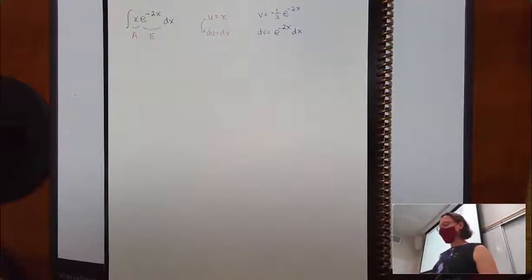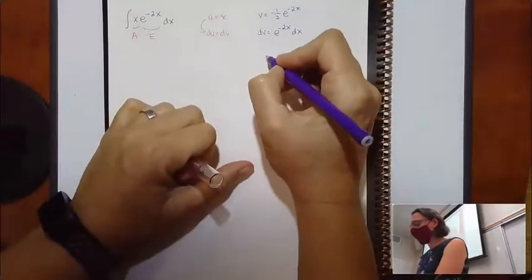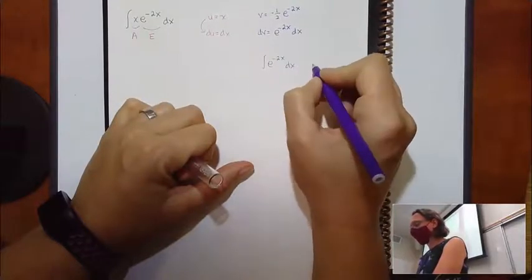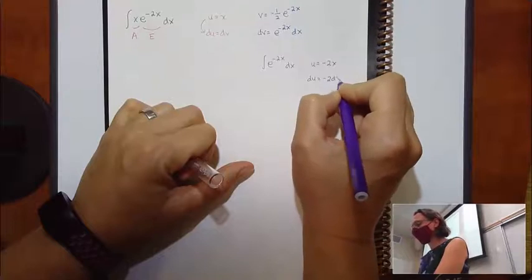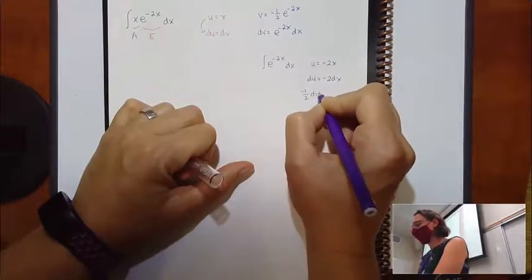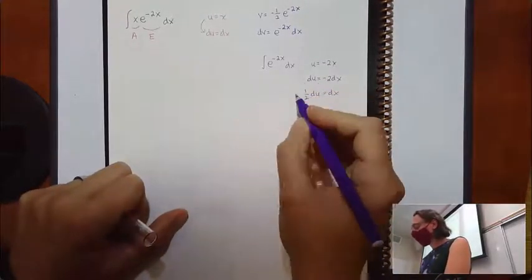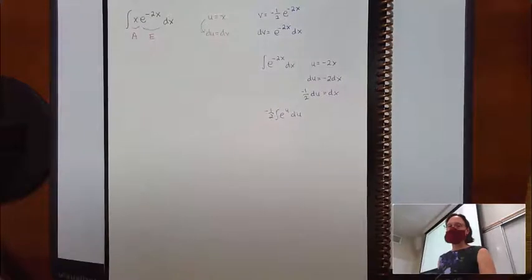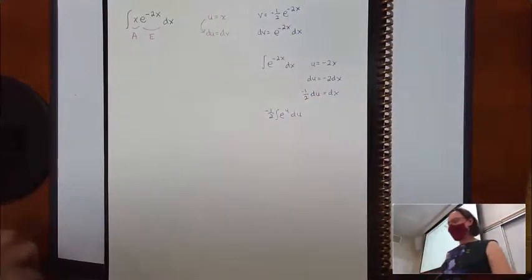That negative one half is important. If we think about finding the anti-derivative of e to the negative 2x dx, I could come off to the side and let u be negative 2x, which means du = negative 2 dx, and I'd have negative one half du equals dx. So that's kind of where that negative one half is coming from — we'd end up with negative one half e to the u du. My guess is if you made a mistake on the problem, it's probably with that negative one half.